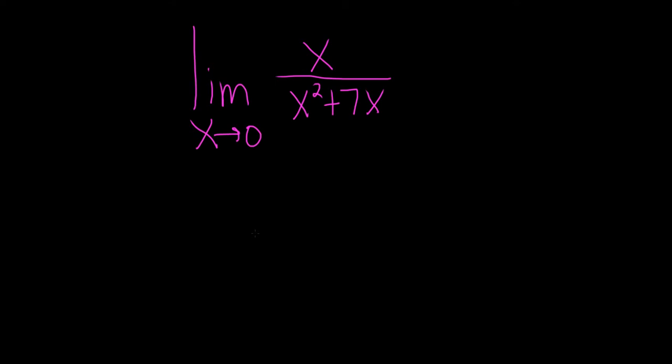Find the limit as x approaches 0 of x over x squared plus 7x. So whenever you're computing limits, the first thing you should always try is to take this number, in this case 0, and plug it in for all your x's.